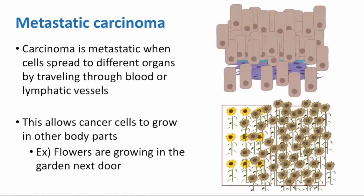Metastatic carcinoma is the last step. This is where cancer cells spread to different organs by traveling through blood or lymphatic vessels, which allows cancer cells to grow in other parts of the body. Here, you can think of this as our flowers not only crossing their borders, but beginning to grow in the garden next door as well.